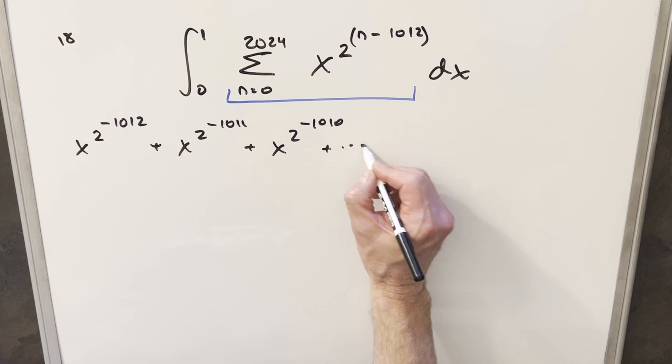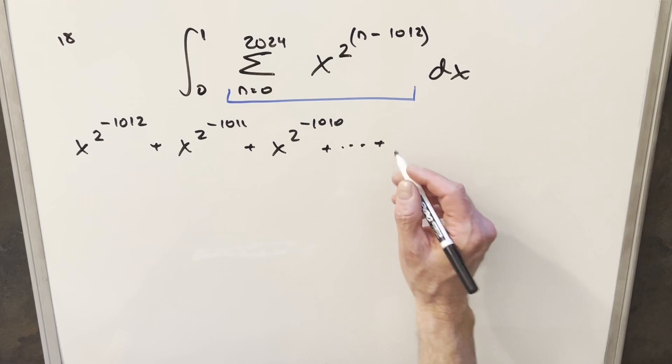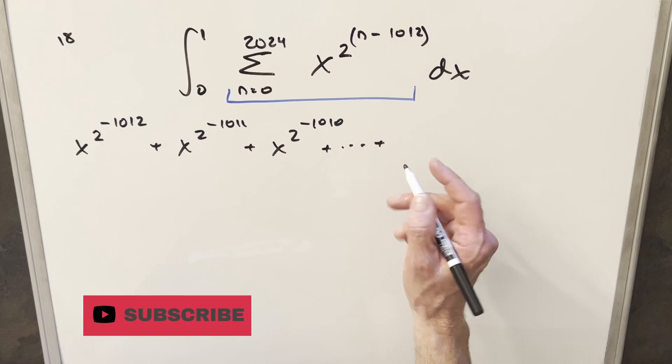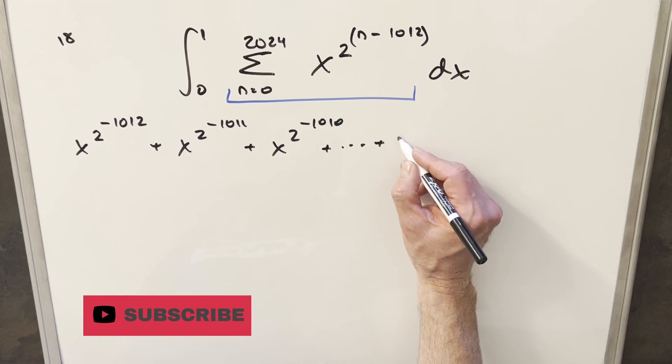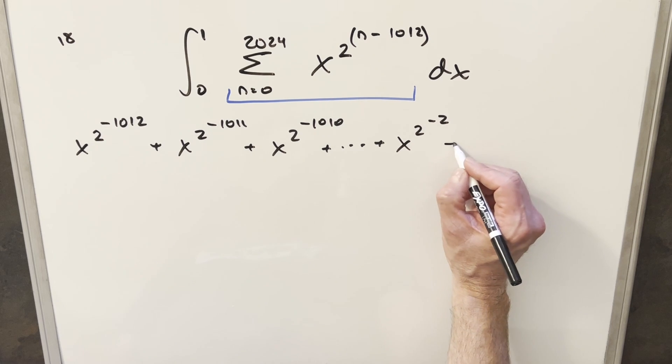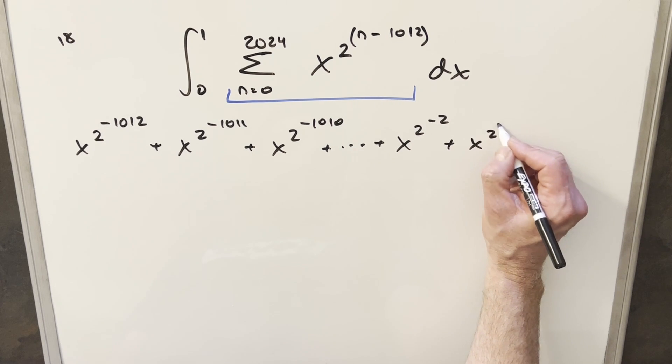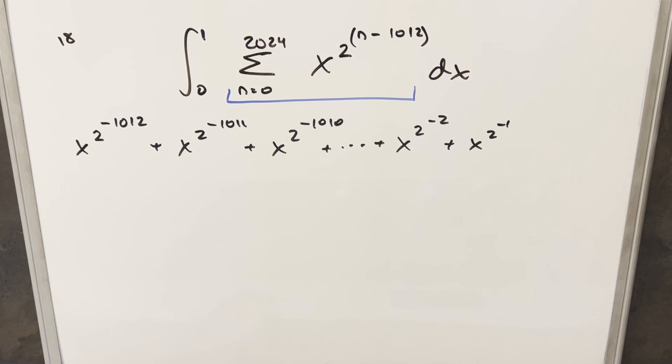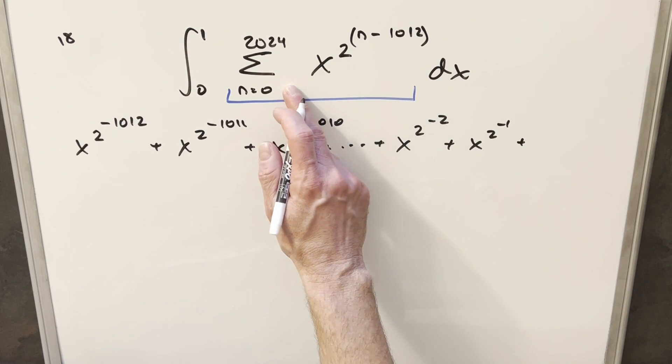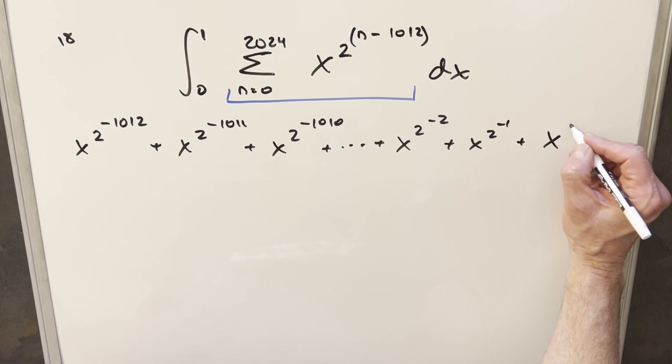And then of course, this is going to keep going on and on, but I'll write the last few negative terms. So when we're up at like 1010, when n is 1010, this is going to become x to the 2 to the minus 2. And then the next one, we're going to have x to the 2 to the minus 1. And then finally, when we get to the point where n is equal to 1012, we're going to get x to the 2.